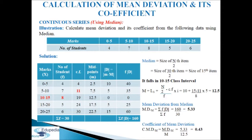Last column f·d: 4×10=40, 7×5=35, 8×0=0, 5×5=25, 6×15=60, giving sigma f·d = 160. Mean deviation from median MD(m) = sigma f·d / sigma f = 160 / 30 = 5.33.